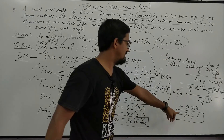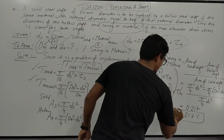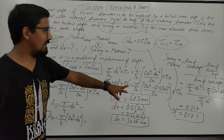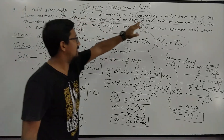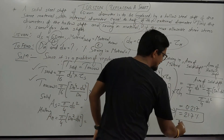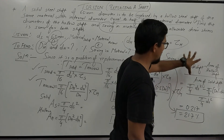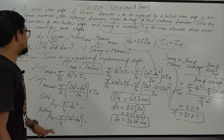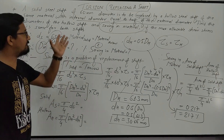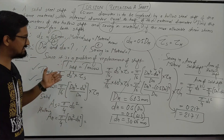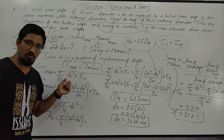So the saving in material is 21.7%. If the solid steel shaft is replaced by a hollow steel shaft, we get a percentage saving in material of 21.7%, calculated by means of cross-sectional areas. This was a typical problem for replacing a shaft from the module torsion. If you like this video, do share, like, and subscribe. Thank you for watching.